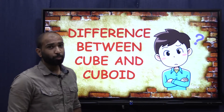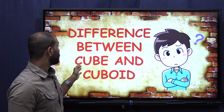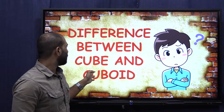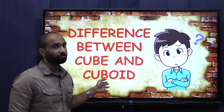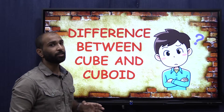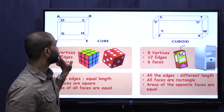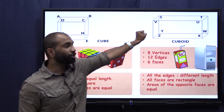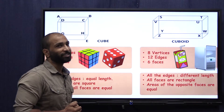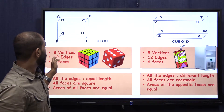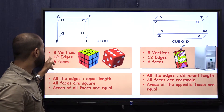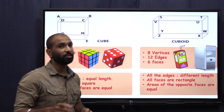Do you know what a cube is? We have learned about cuboid, and most people have a confusion between cube and cuboid. This is a cube and that's a cuboid. Let's look at the similarities first. Both of them have eight vertices, twelve edges and six faces.